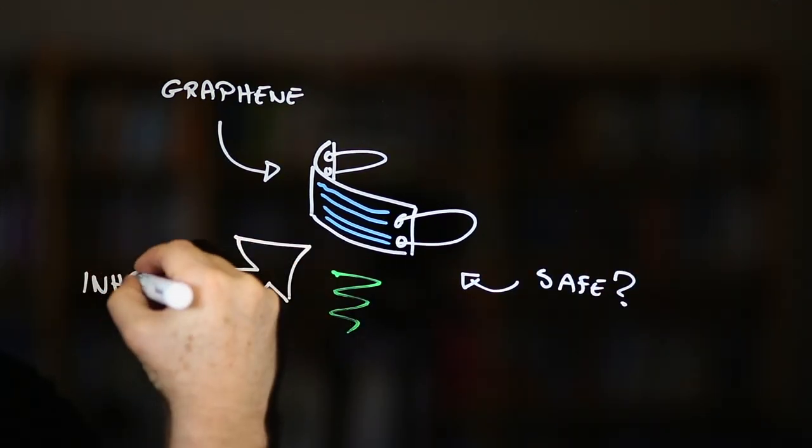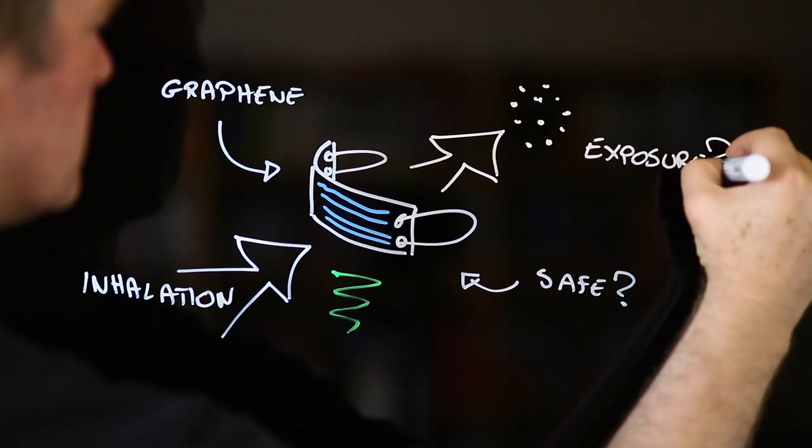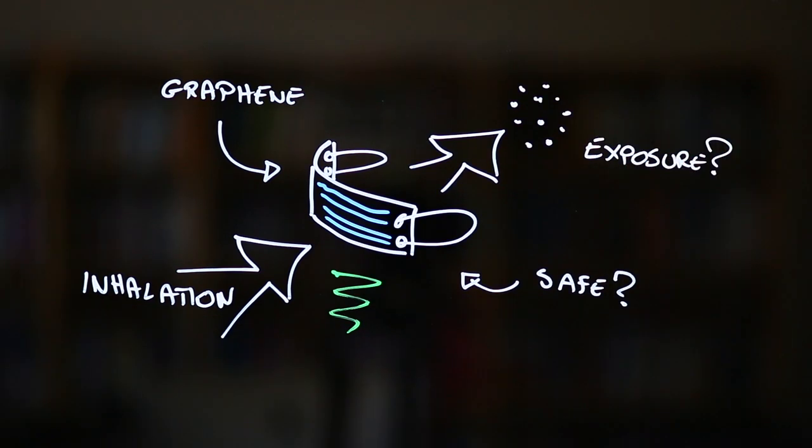But it is an extremely important one, as the material is finding its way into more and more products, including items like face masks, where there's a chance of the graphene becoming detached and entering the body.